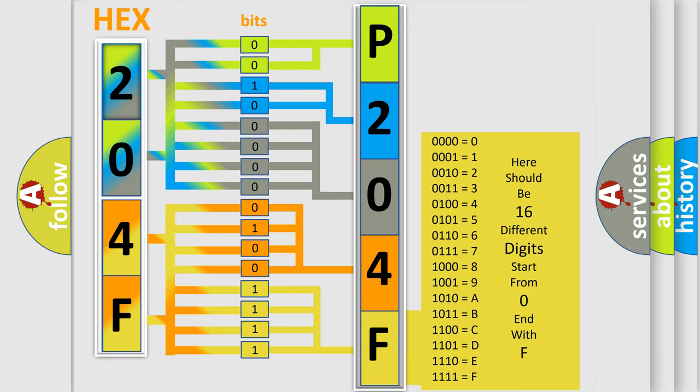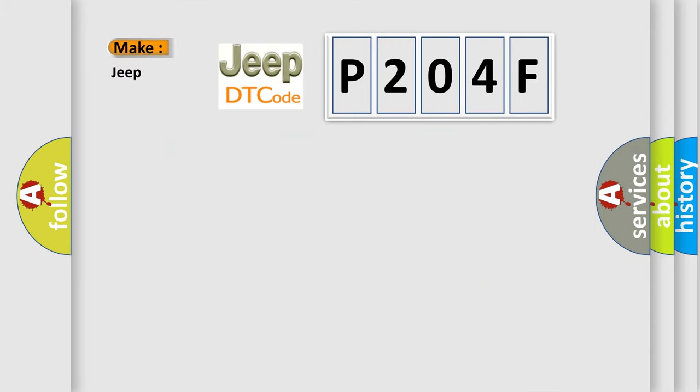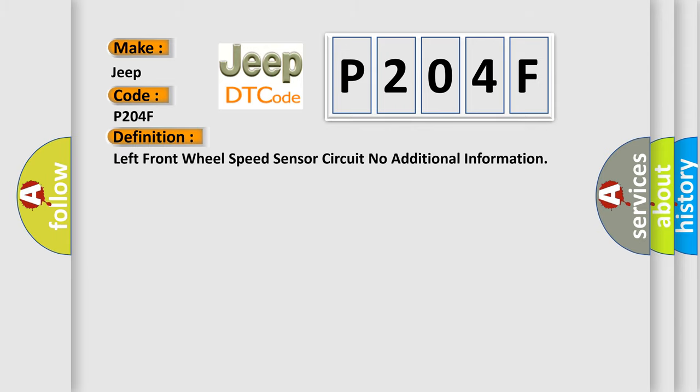We now know in what way the diagnostic tool translates the received information into a more comprehensible format. The number itself does not make sense to us if we cannot assign information about it to what it actually expresses. So, what does the diagnostic trouble code P204F interpret specifically for Jeep car manufacturers? The basic definition is: left front wheel speed sensor circuit, no additional information.